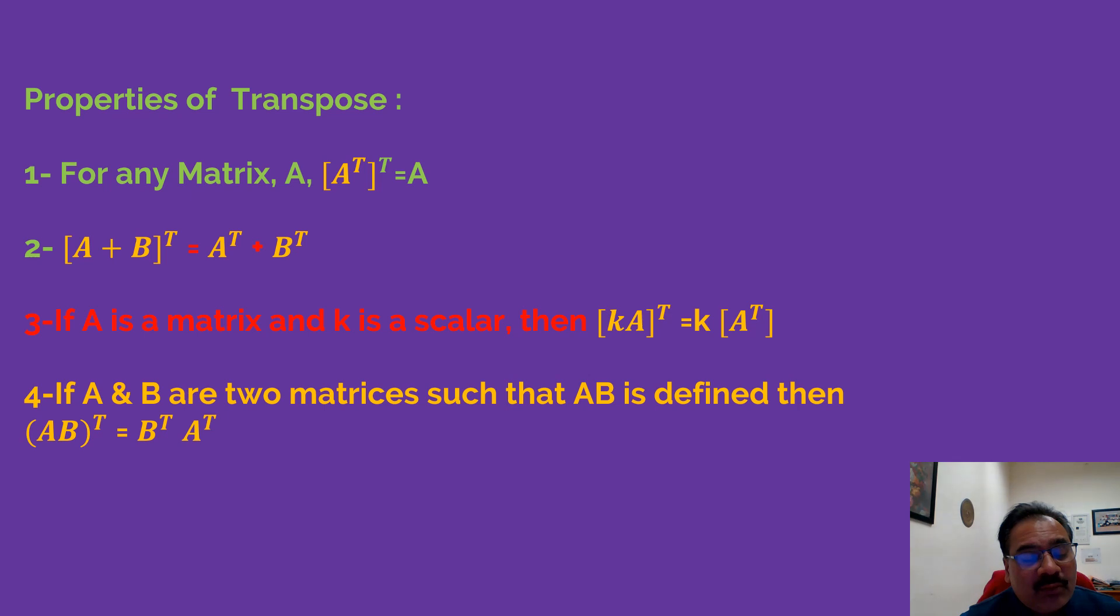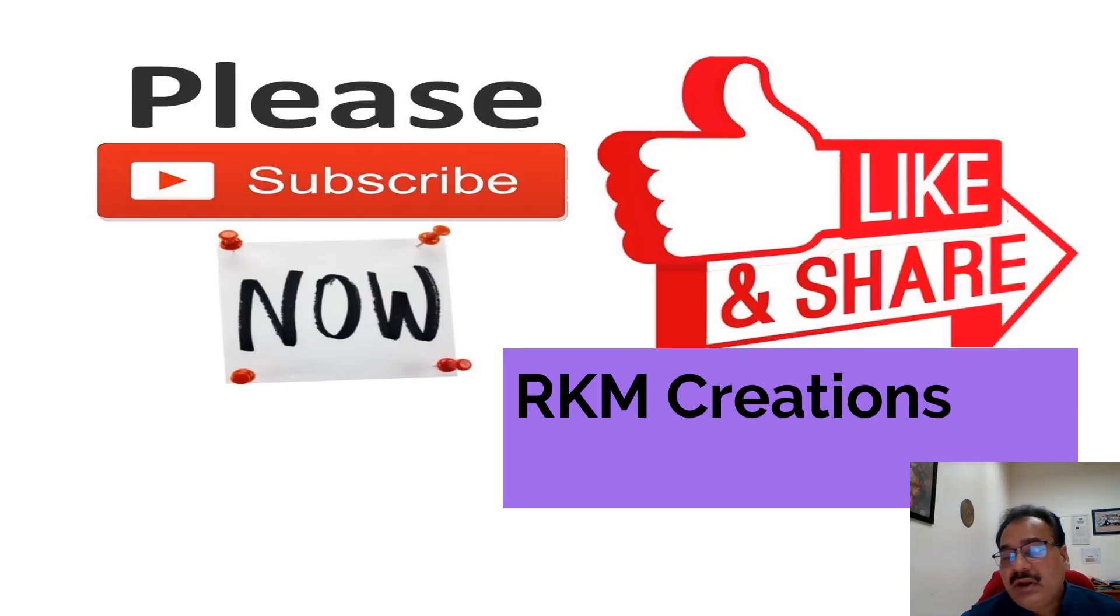If A and B are two matrices such that AB is defined, then (AB)^T = B^T A^T. The multiplication of two matrices, their transpose is B^T into A^T. So this is about the properties of transpose. We have to remember.